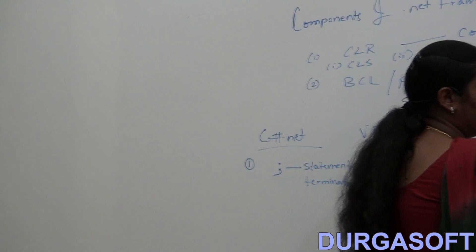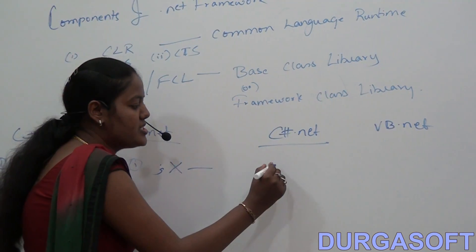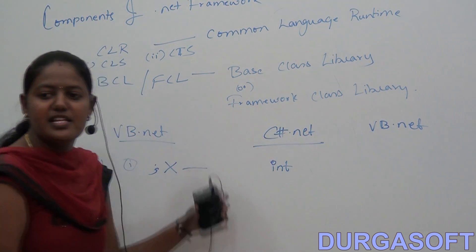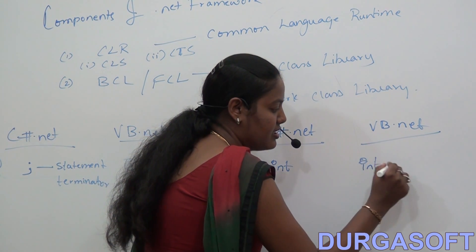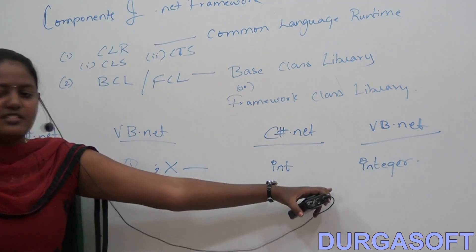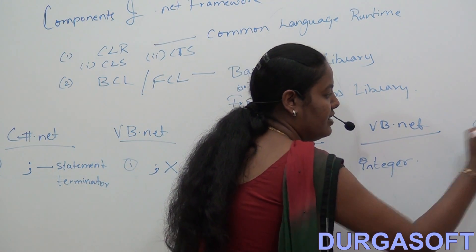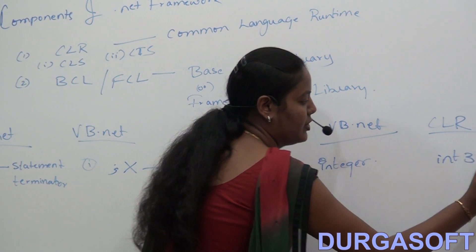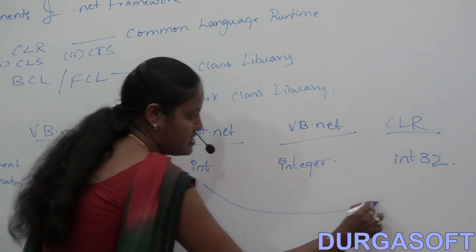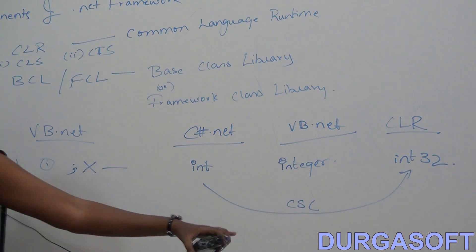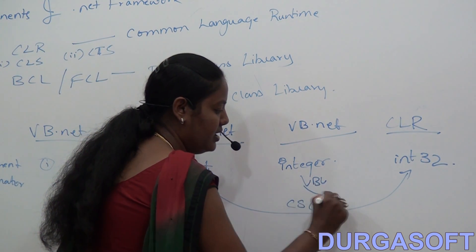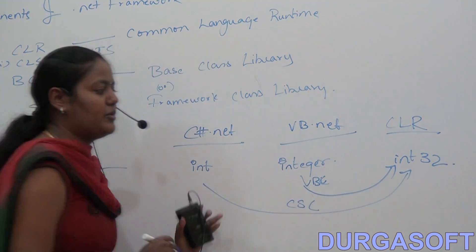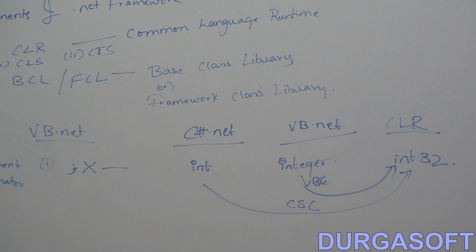For example, in C# .NET we use 'int' as the data type, but in VB .NET we use 'Integer'. CLR has its own data type called 'Int32'. The CSC compiler (C# compiler) converts the 'int' data type to 'Int32', and in VB .NET the VBC compiler converts 'Integer' to 'Int32'. So CLR can understand all languages' data types.